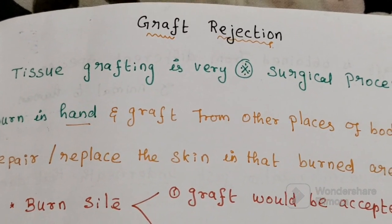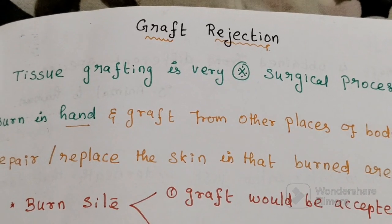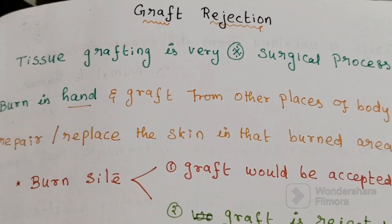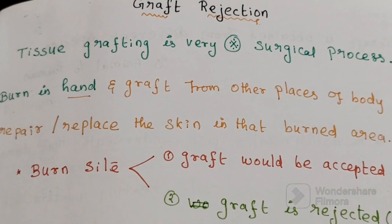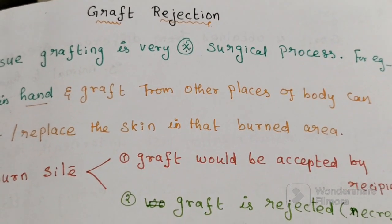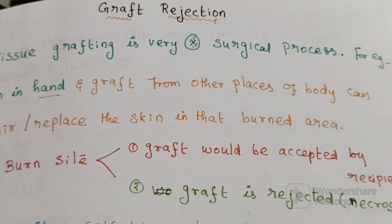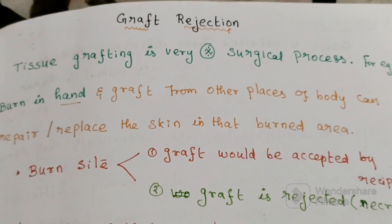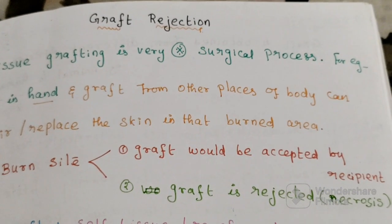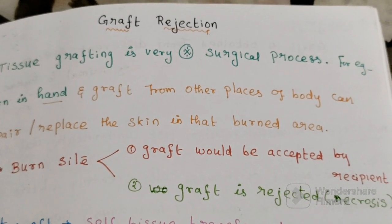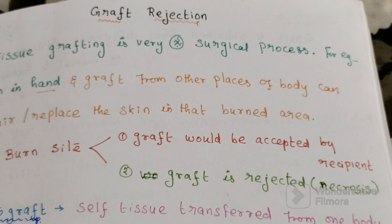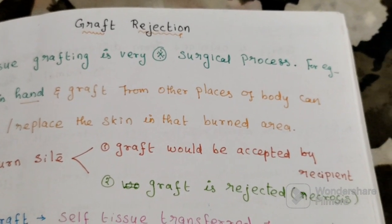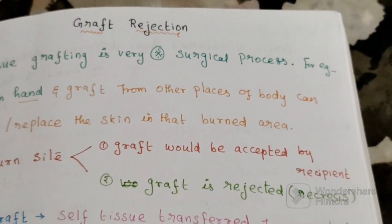Today's topic of discussion is graft rejection. Tissue grafting is a very important surgical process. Imagine you have a third degree burn on your hands and a graft from other places of your body can repair or replace the skin in that burned area. That is why it is a useful process, but there is a risk associated with it — rejection of the graft. Our goal is to understand why a graft would be rejected.